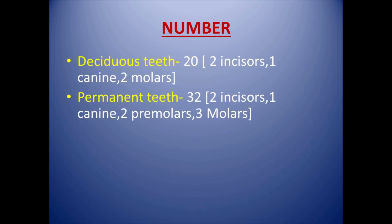Regarding number, deciduous teeth are 20 in number — that is 2 incisors, 1 canine, and 2 molars in each quadrant. Permanent teeth are 32 — 2 incisors, 1 canine, 2 premolars, and 3 molars. In deciduous dentition, premolars are absent.